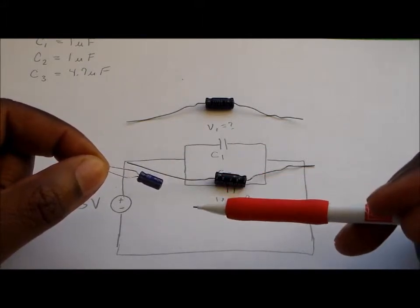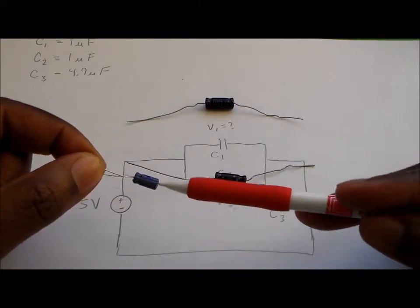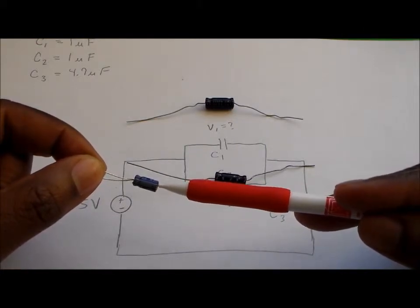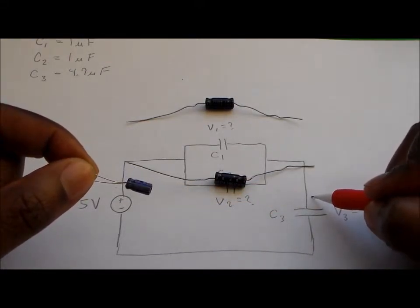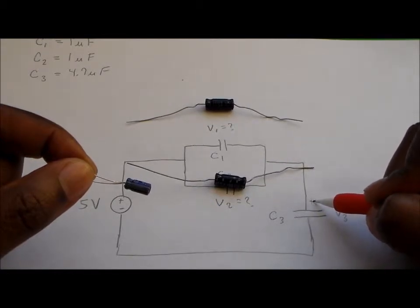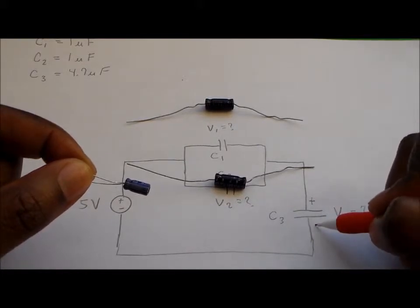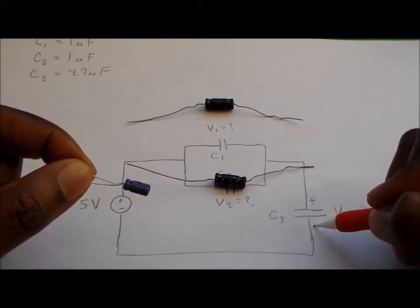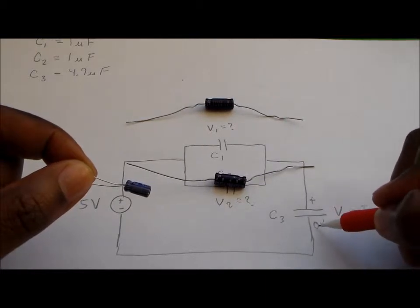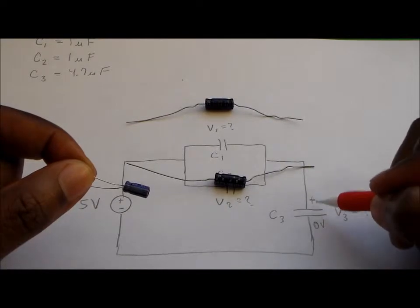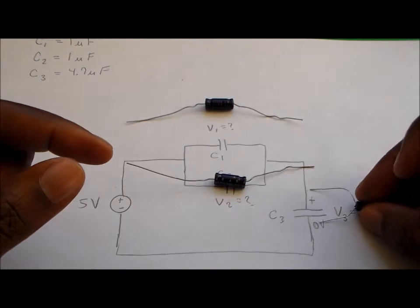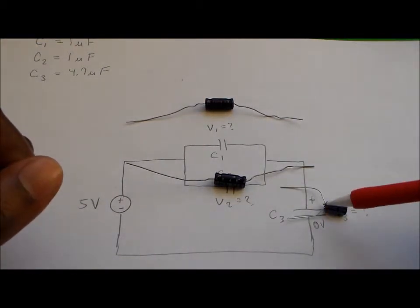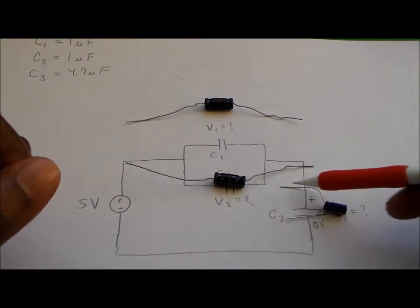The capacitor has to be connected correctly or else it could possibly explode. The negative terminal has to be connected to the end of lower potential. For capacitor 3, the higher voltage will be on one terminal — that's the positive terminal — and the negative terminal should be on the other end. By the time the voltage reaches that point, it should be equal to 0 volts. So the capacitor is connected with the negative terminal at the low-potential end and the positive terminal at the high-potential end.